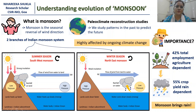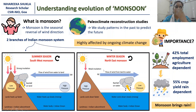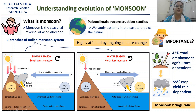55 percent — that is, the majority of crop yield — is rain dependent. And as we know, monsoon brings rain. Therefore, it affects us. We need to understand how the monsoon will behave in the future by studying how it has been behaving in the past, which comes under paleoclimate reconstruction studies.